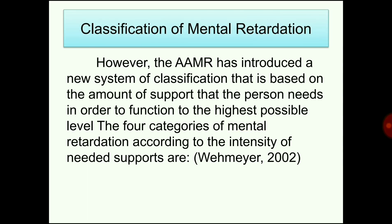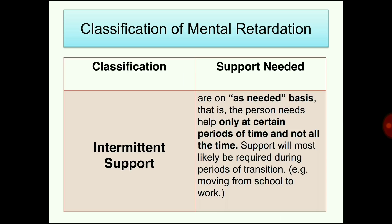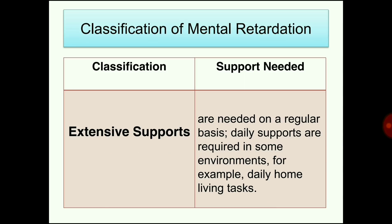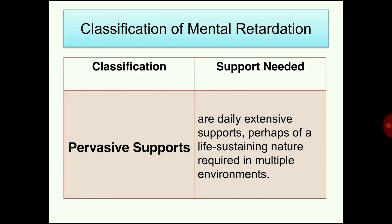There are four categories of mental retardation according to intensity of needed supports. First, intermittent support, seen in mild mental retardation, is needed only at certain periods of time — most likely during transitions like moving from school to work. Second, limited support in moderate mental retardation is required consistently but not on a daily basis and is non-intensive. Third, extensive support in severe mental retardation is needed regularly with daily support in some environments such as home living. Fourth, pervasive support for profound mental retardation involves daily extensive, life-sustaining supports required across multiple environments.